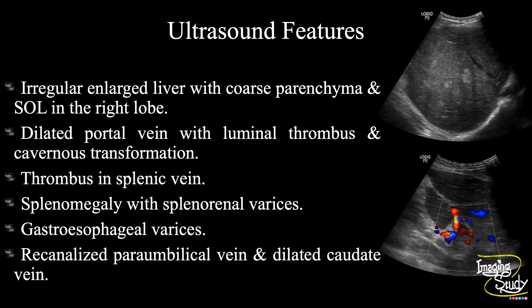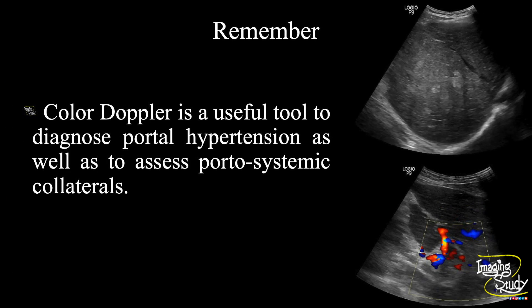Have you detected any important features missing? We found only a negligible amount of collection at the iliac fossa — we expected a good amount of ascitic fluid here, which was not present. The take-home message: color Doppler is a useful tool to diagnose portal hypertension and to assess portosystemic collaterals. So if you have Doppler facility, always in a case of chronic liver disease, try to search for portosystemic collaterals.